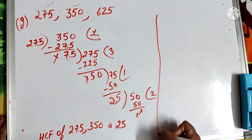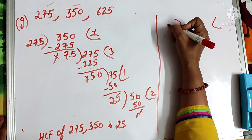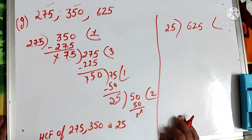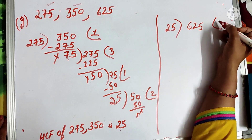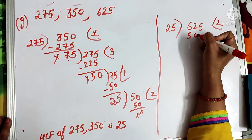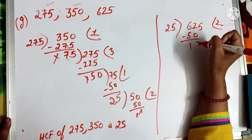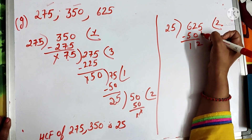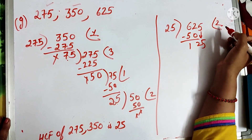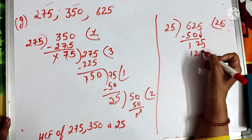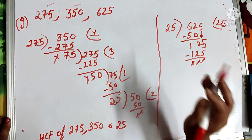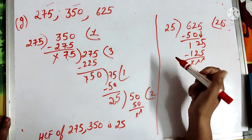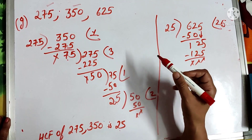Now 25 becomes the divisor and 625 — the remaining number — becomes the dividend. 25 into 25 is 625, so 625 is completely divisible by 25 with remainder 0. Therefore 25 is the HCF of all three numbers.